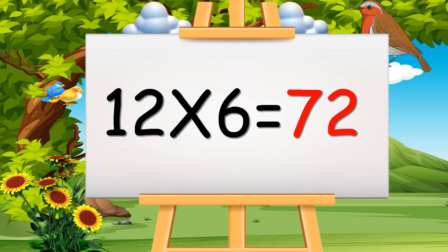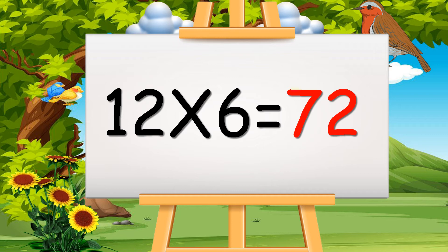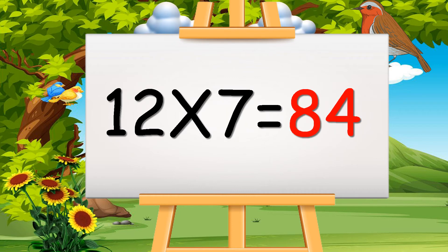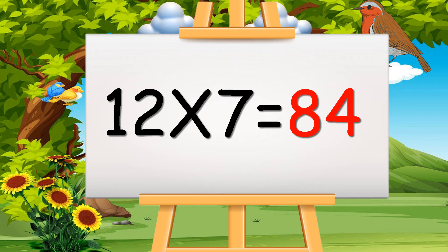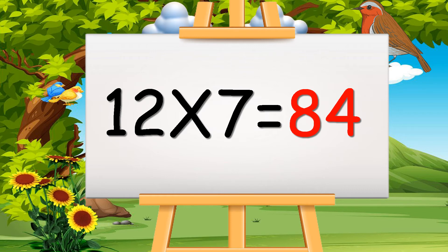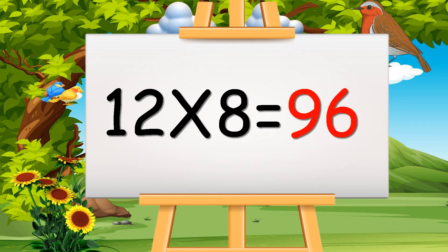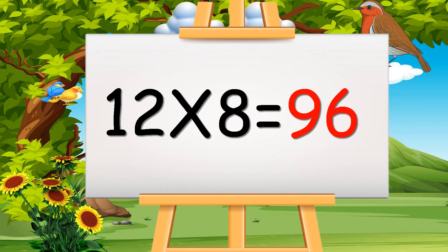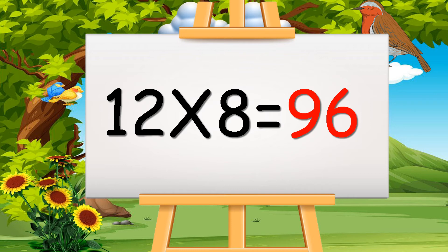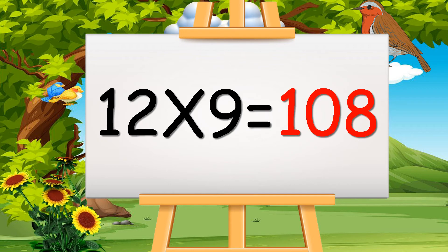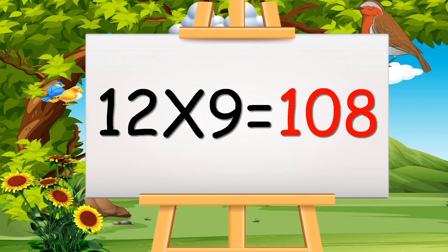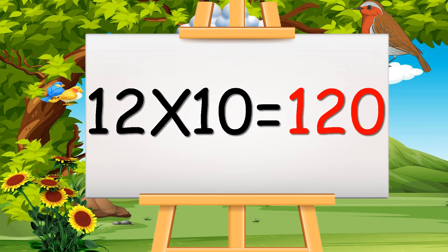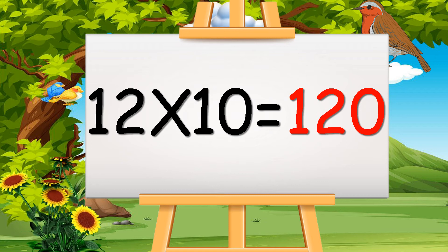12 sixes are 72. 12 sevens are 84. 12 eights are 96. 12 nines are 108.